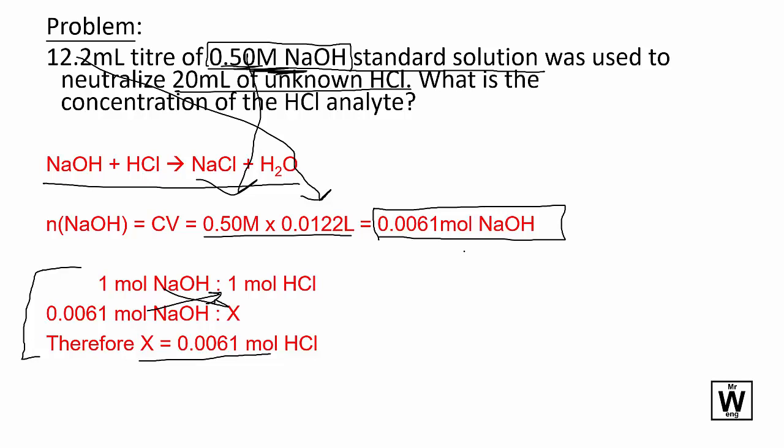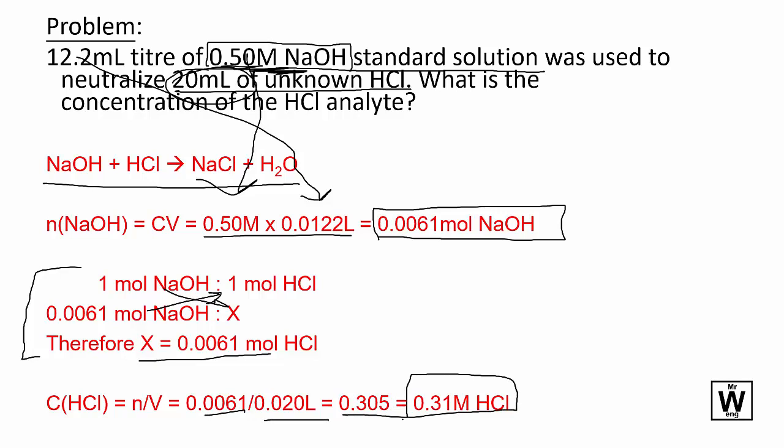So the last one is, tell us what the final concentration is. You put 20 mL, took 20 mL as the analyte. So just divide it by 20 mL and that's the answer. So the unknown concentration is 0.31 molar HCl.